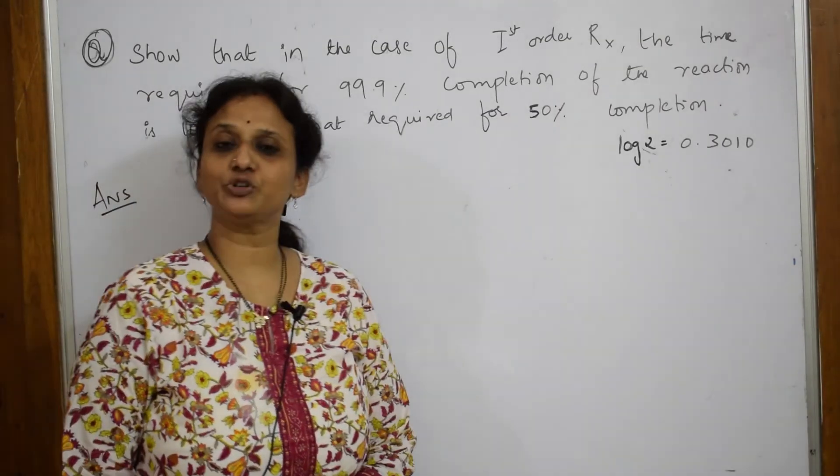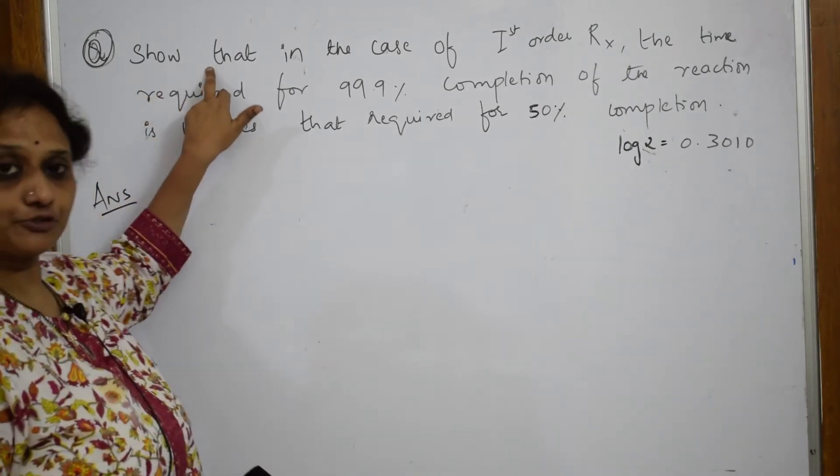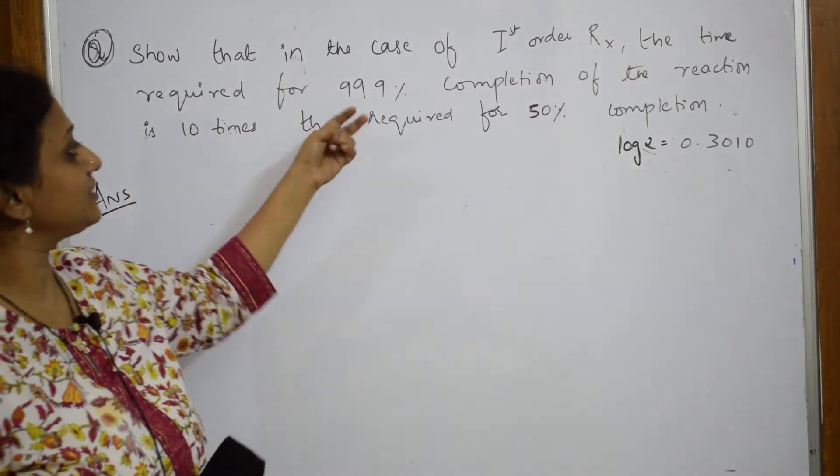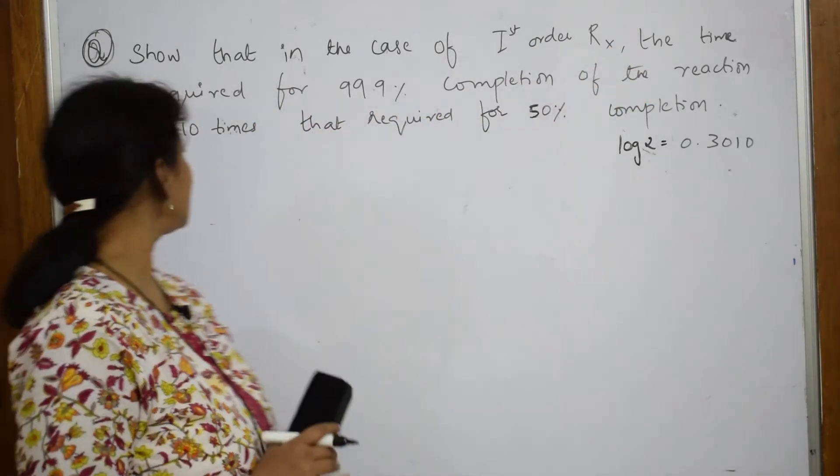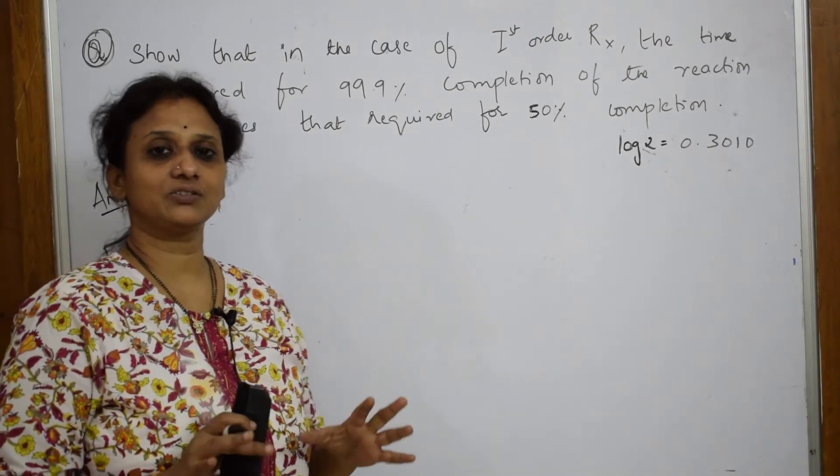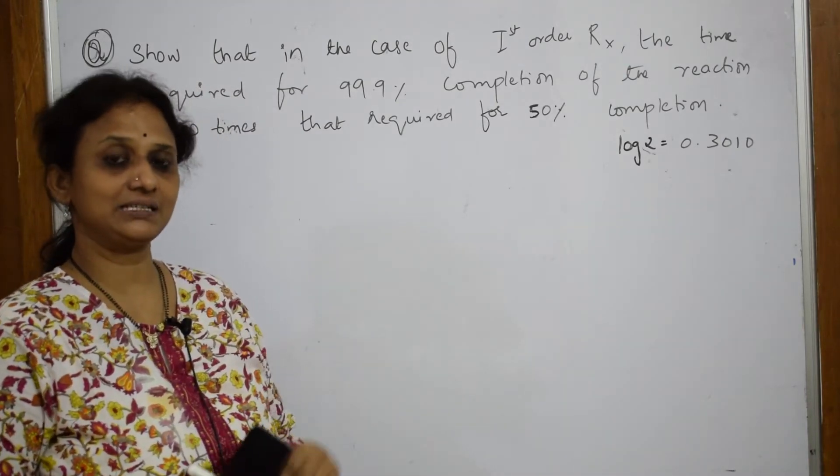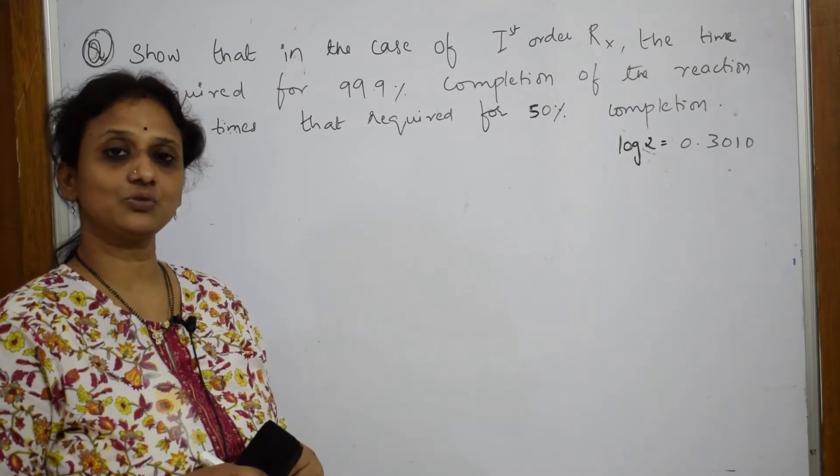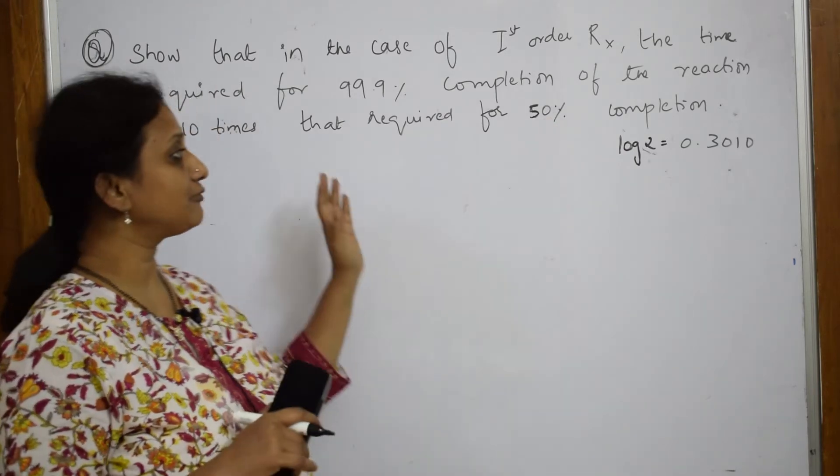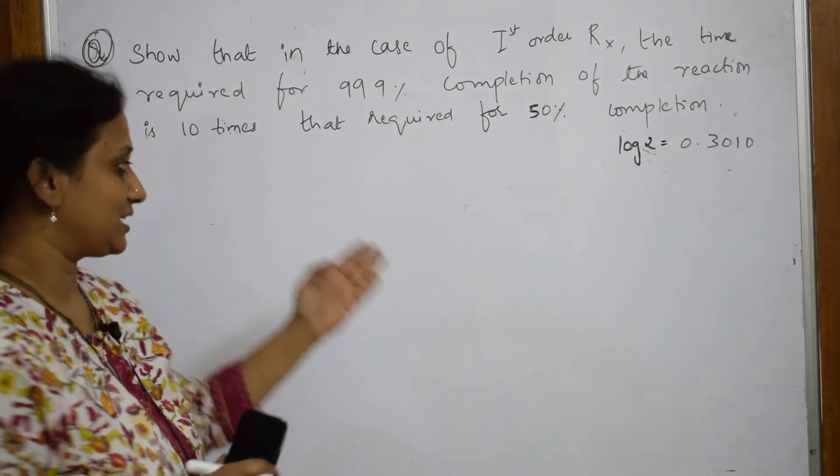Let us do one more numerical for first order kinetics. Let us read the equation. I have to show that in the case of first order reaction, the time required for 99% completion of the reaction is 10 times that required for 50% completion. No data given, no rate constant given. What should I do?